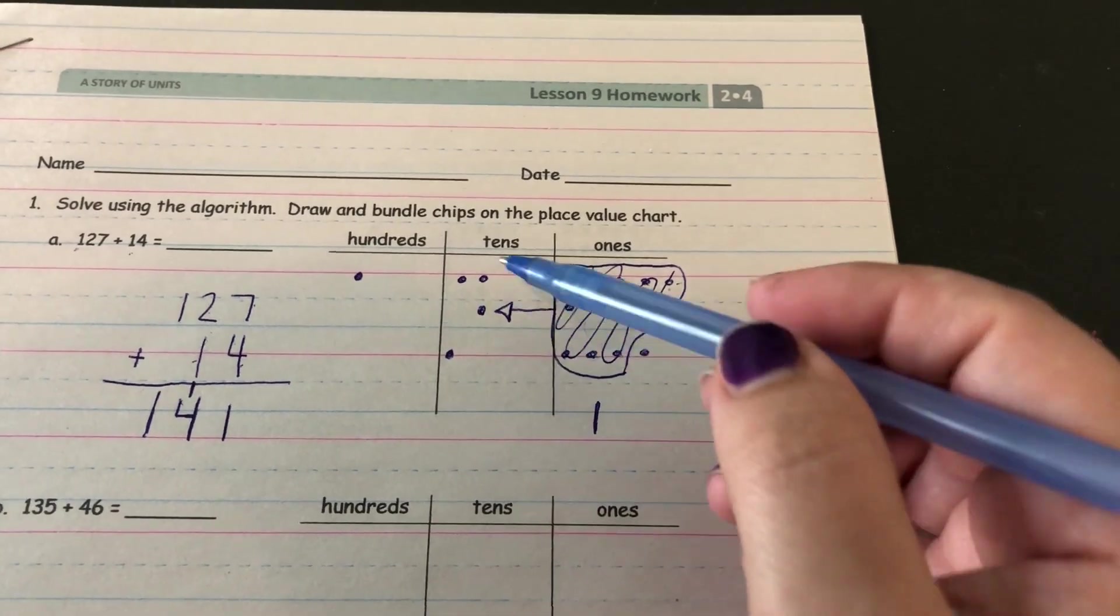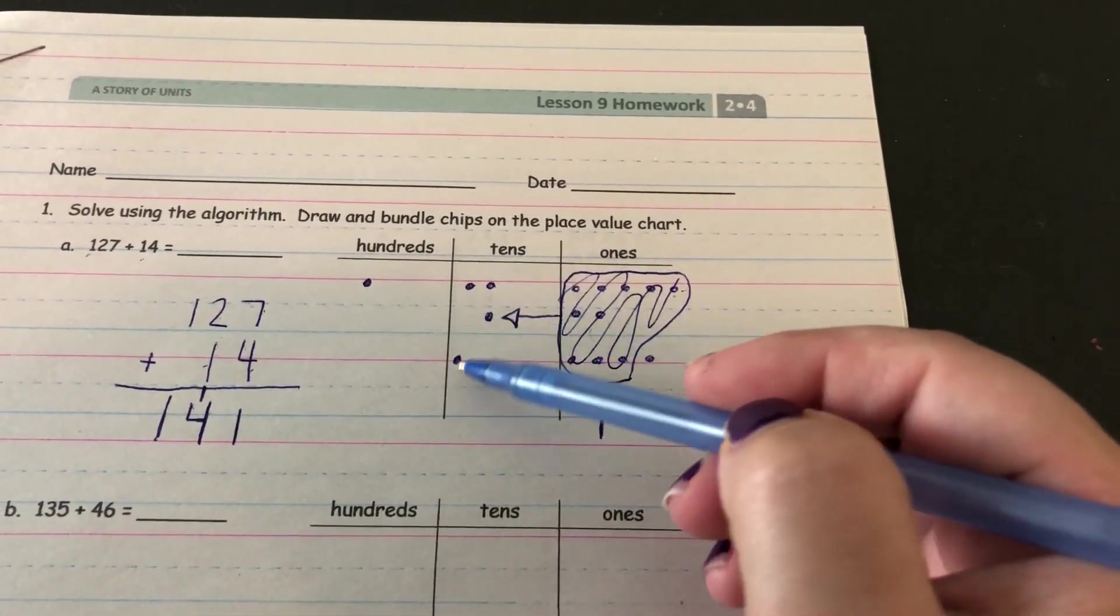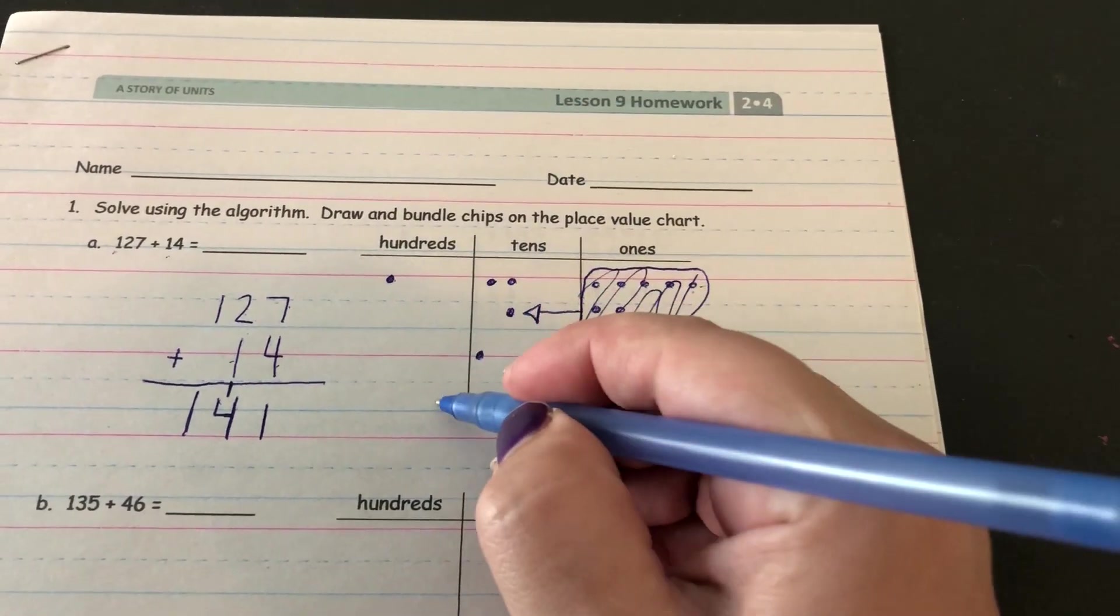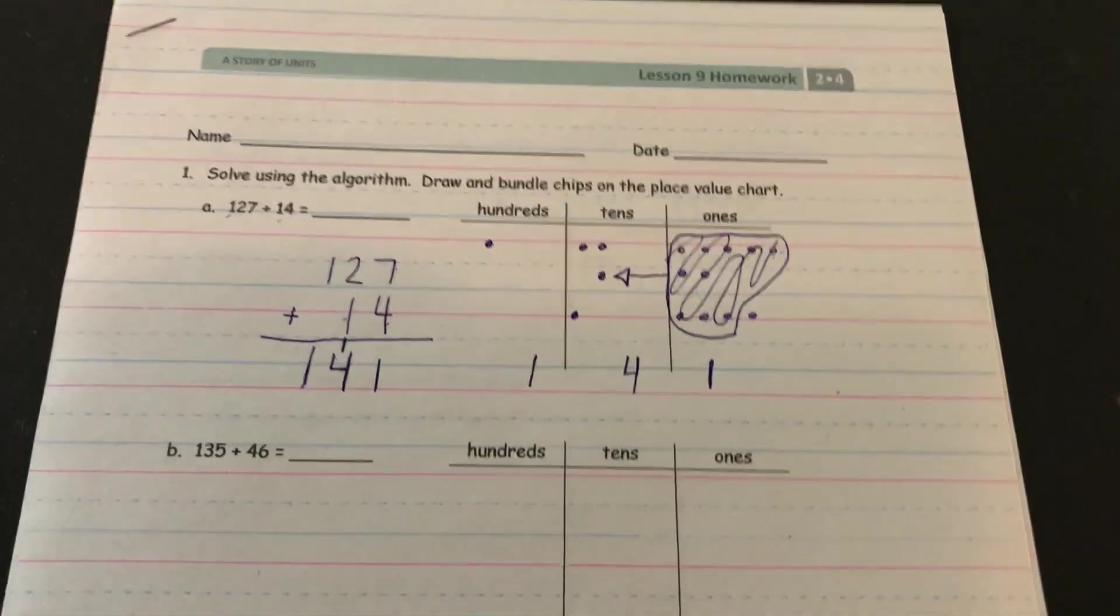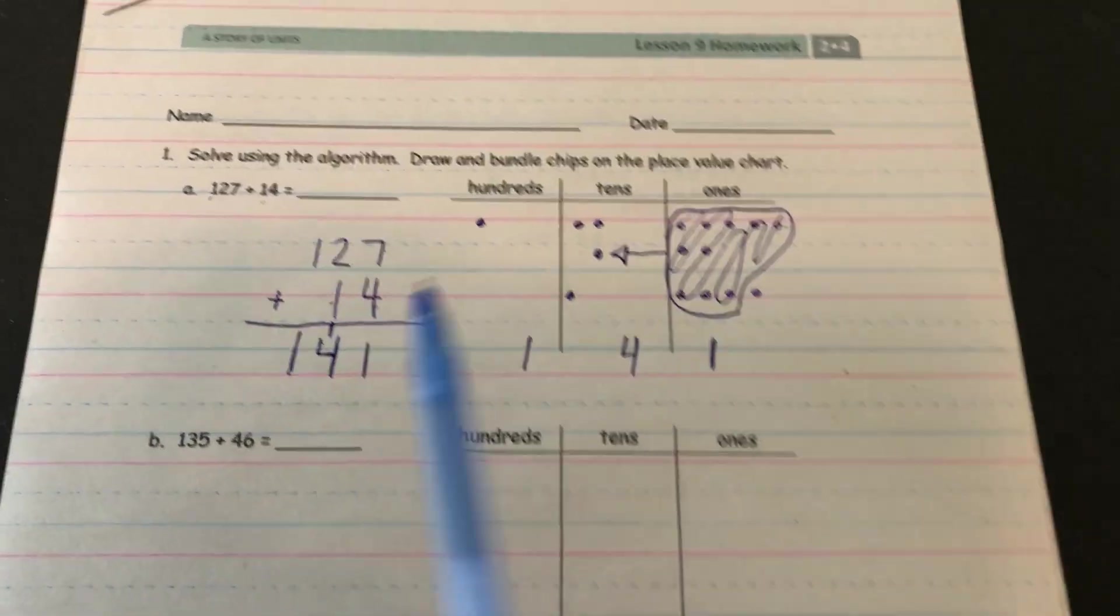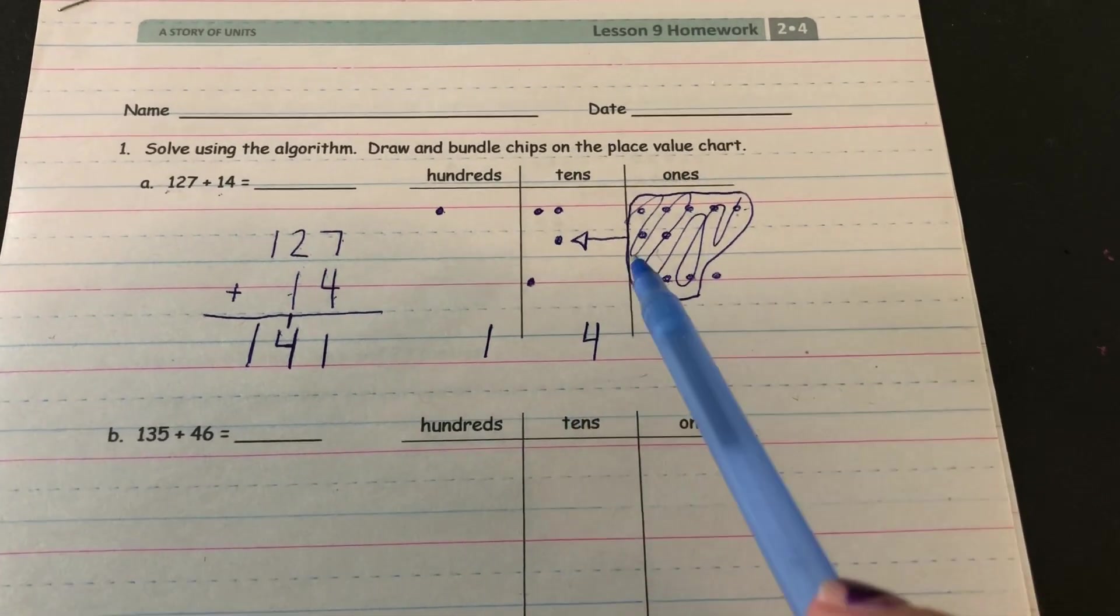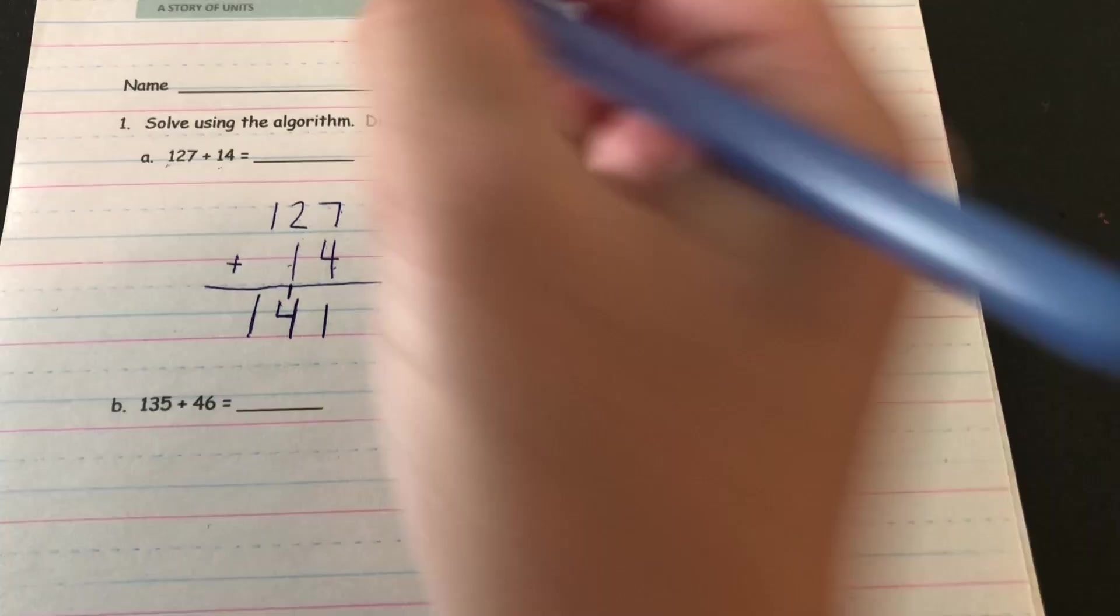Now I'll add my tens. One, two, three, four tens. And now I can add my hundreds. One hundred. So I can see that either way I do it, either in the standard algorithm or on a place value chart, I get the answer of 141.